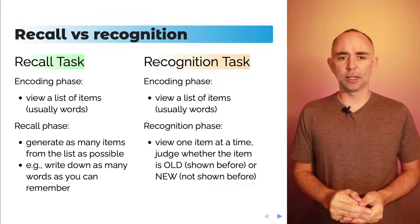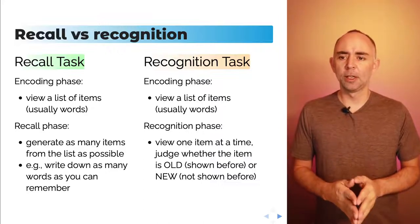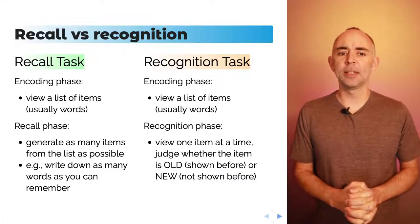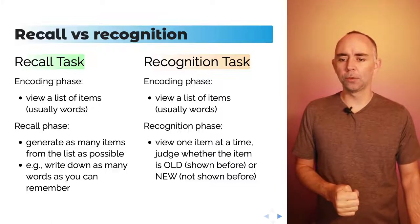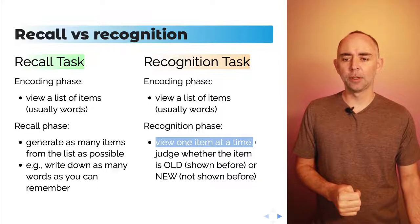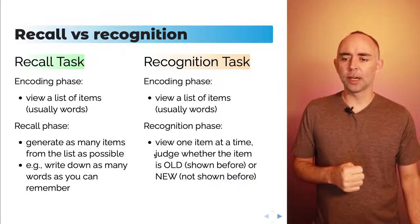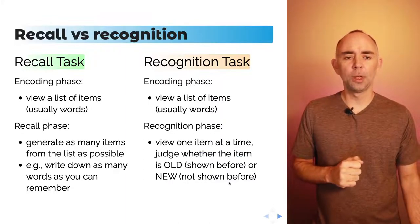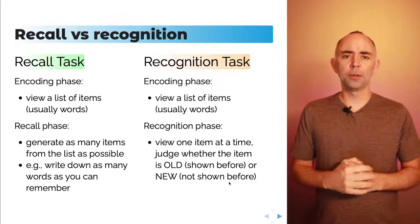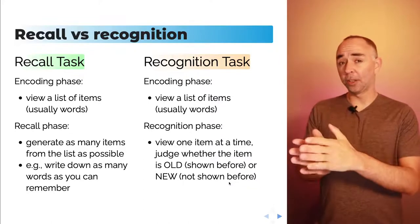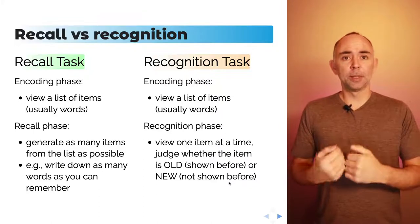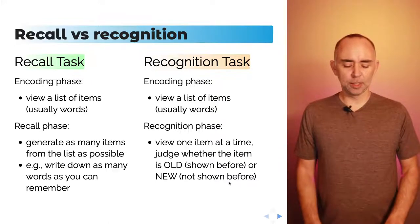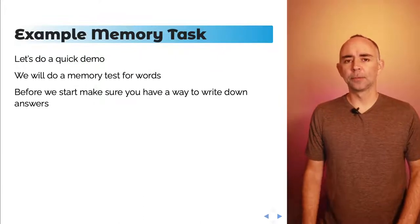Here's a different way that people sometimes measure memory performance: the recognition memory task. The encoding phase is fairly similar — you view a list of words or items for a later recognition test. In the recognition phase, participants view typically one item at a time. You see a word or picture you may have seen before, and your task is to judge whether the item is an old item — one that was shown before — or a new item — one that was not shown before. Both kinds of tasks give different kinds of results, which we'll see in the memory phenomena section.